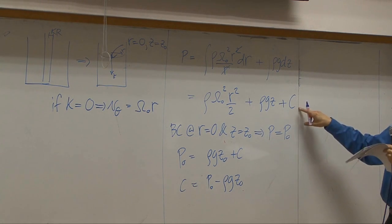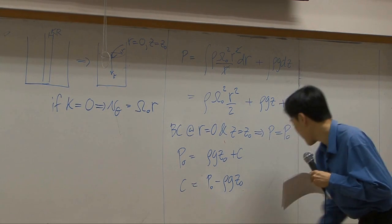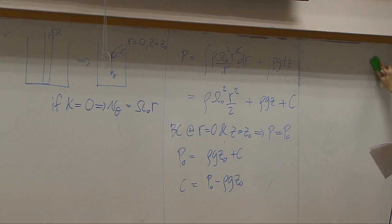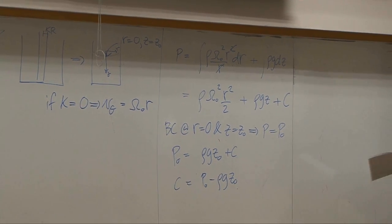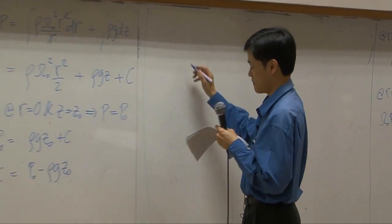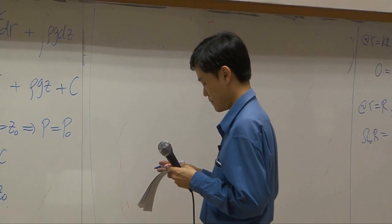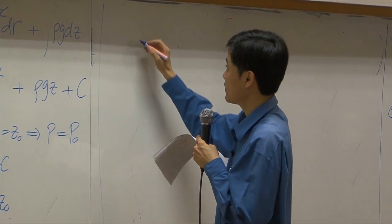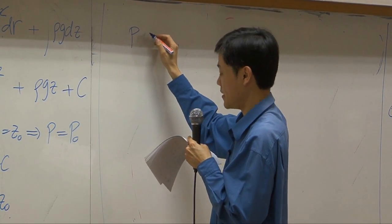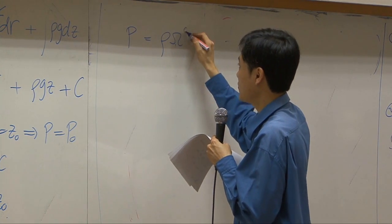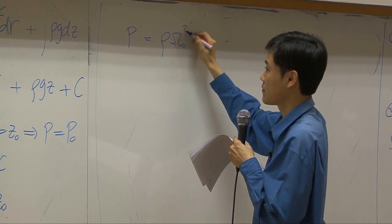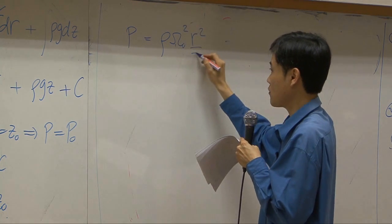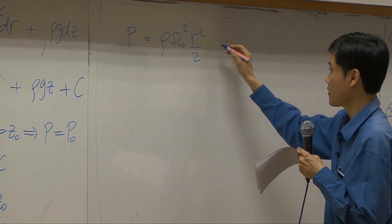Take this constant back to the equation. So you have p equal to ρω²r²/2 minus ρg·z plus the constant substituted in.